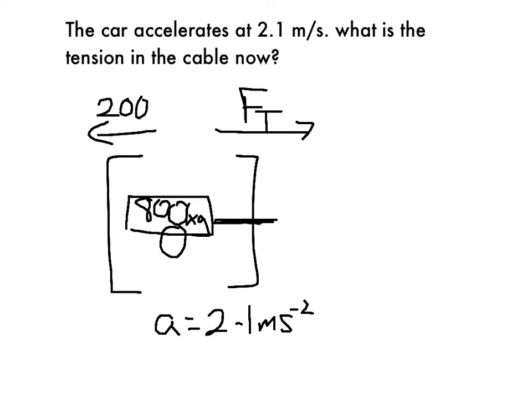So those are the only forces that act on the trailer. And so, just by applying Newton's second law again here, net force equals ma. So the net force is the tension force minus the 200. And that equals the mass, 800, times the acceleration of 2.1.